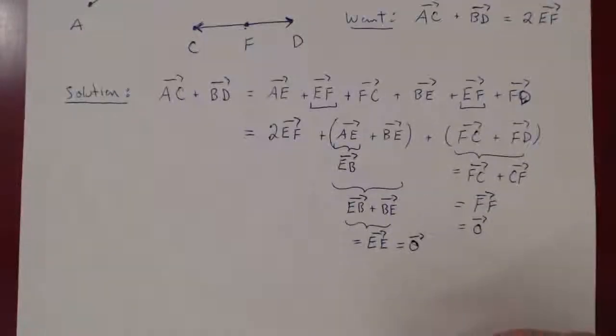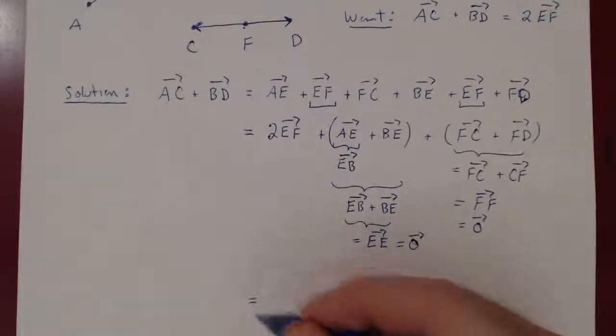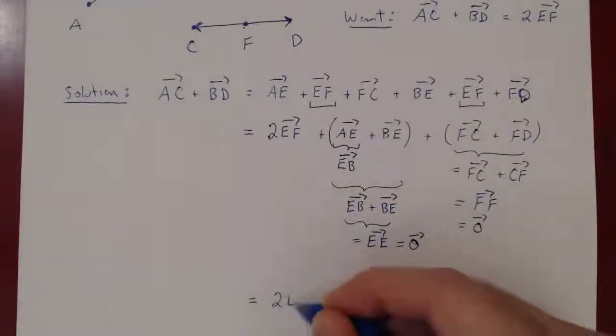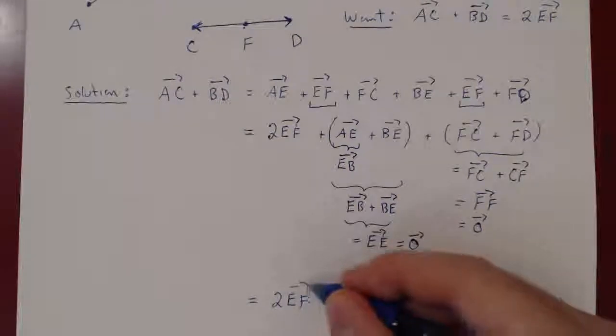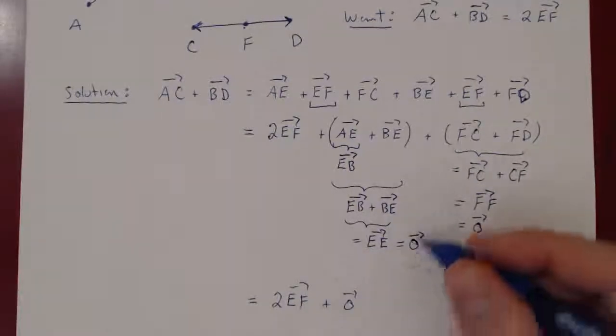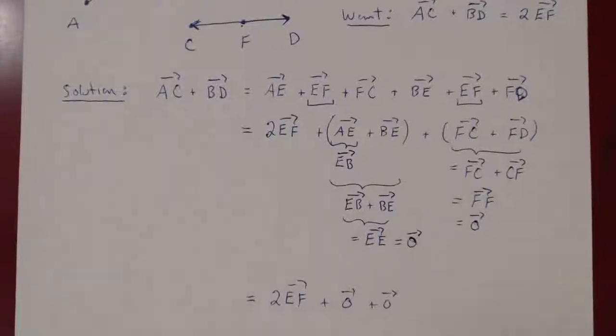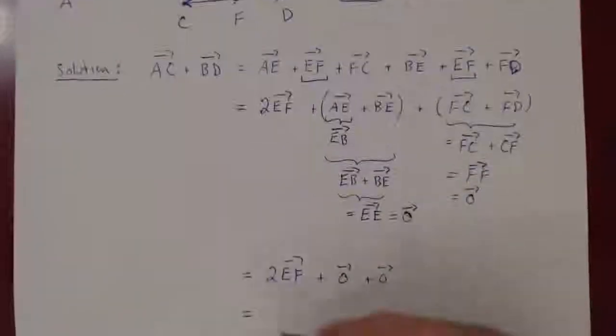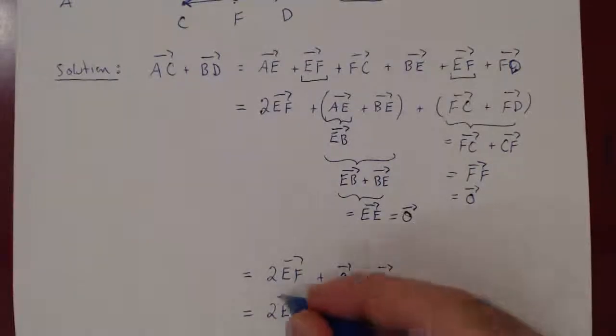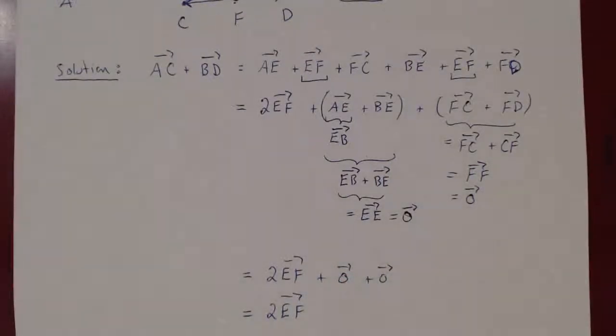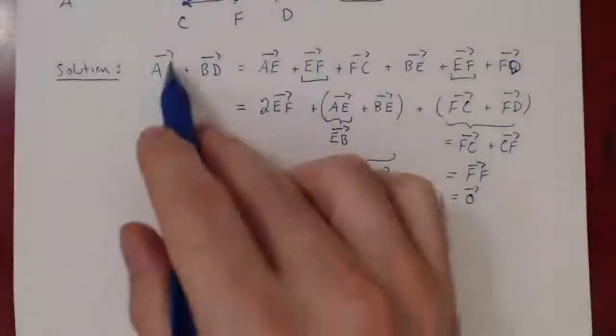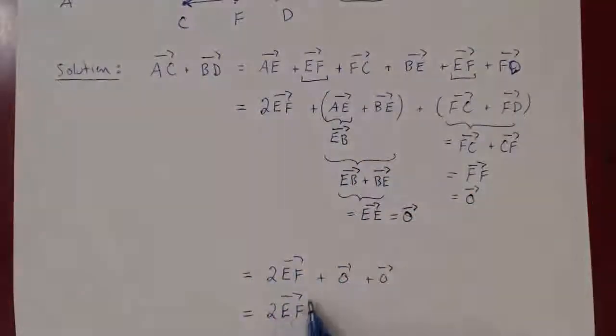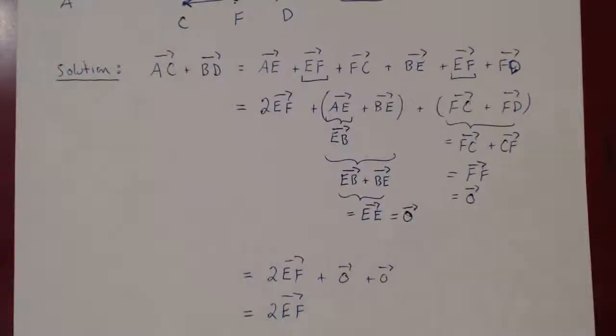So in the end what are we left with? Well, we're left with 2EF plus the zero vector plus the zero vector. But if you add the zero vector to anything nothing happens. The zero vector is the vector of zero length, so we're left with quite simply twice a vector EF, as desired. So indeed AC plus BD is equal to twice of EF and we're done.